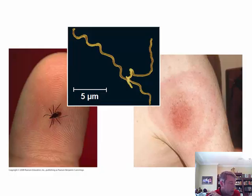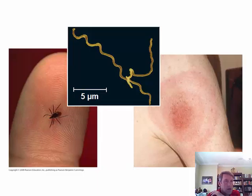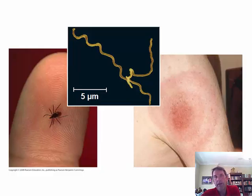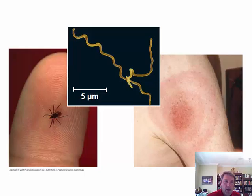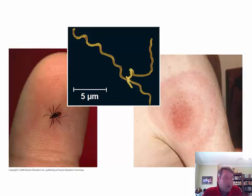Bacteria also release different types of toxins. Exotoxins cause disease and are released while the bacteria is still alive in the body. Endotoxins release disease when the bacteria dies in the body. These are two different types of toxins, and there are many bacterial pathogens that utilize them.